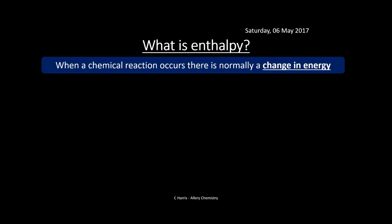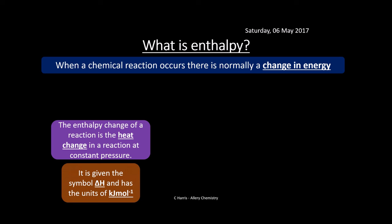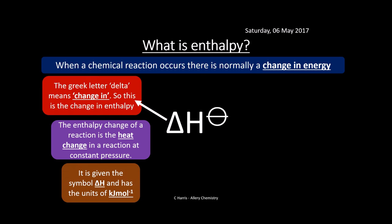So let's start with what is enthalpy. When a chemical reaction occurs, we normally get a change in energy. We can measure this, and we call this the enthalpy change. The enthalpy change is the heat change in a reaction at a constant pressure. It's given the symbol delta H, and has units of kilojoules per mole.